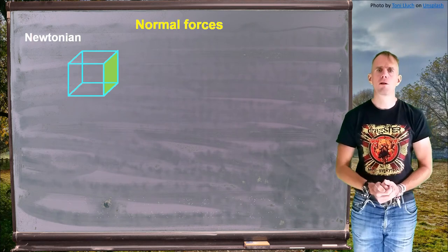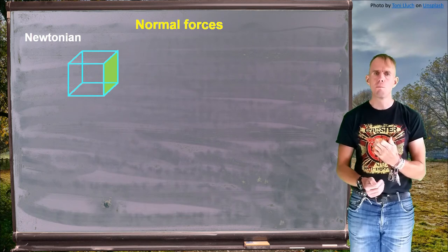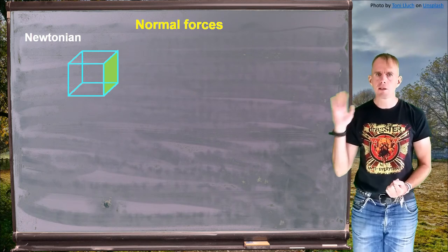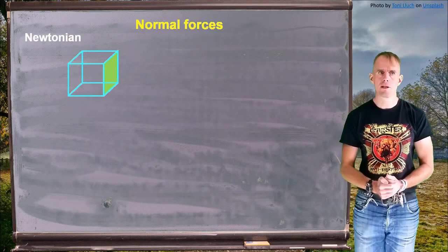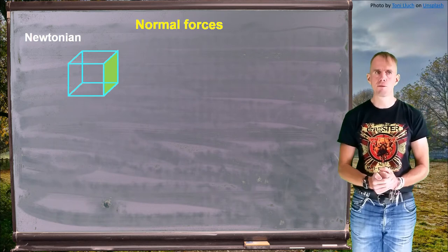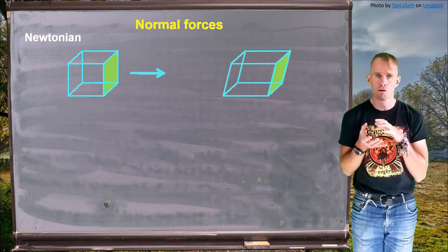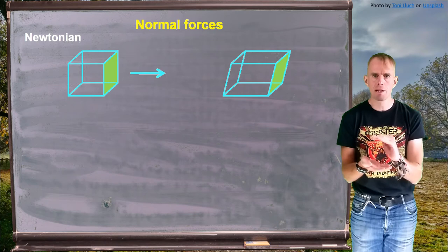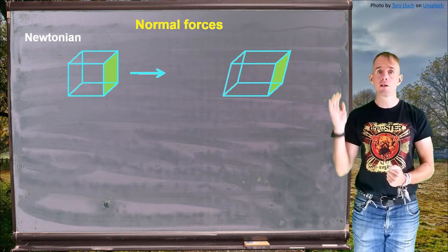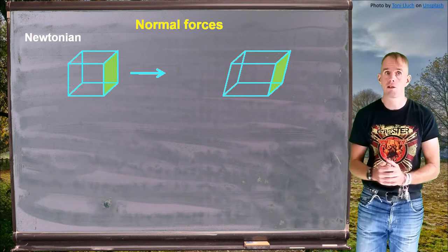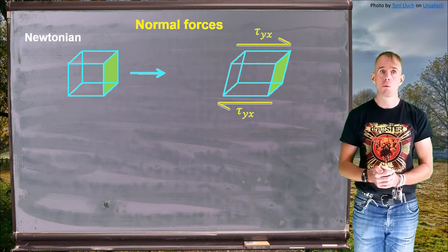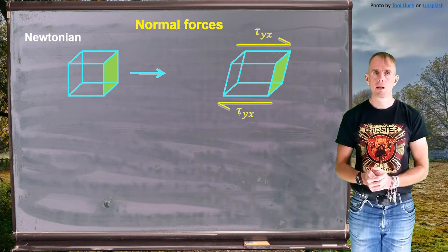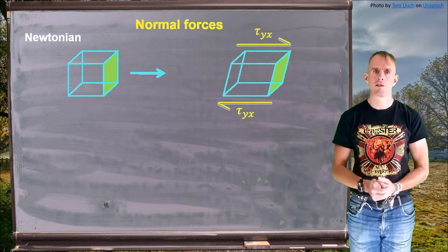I'd like to explore the concept of normal forces a little bit more, because it might be a little counterintuitive at first. Let's remind ourselves what a Newtonian fluid does in shear. Here is a simple cube of fluid — I'm shearing it, driving it along a pipe with a pressure. As I apply that pressure to make the Newtonian fluid flow, it's going to shear and experience a shear stress: tau_Yx on the Y face in the X direction. That's the only stress that's exhibited — a stress in the deformation direction.